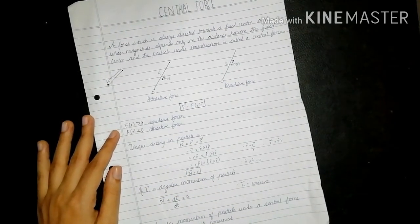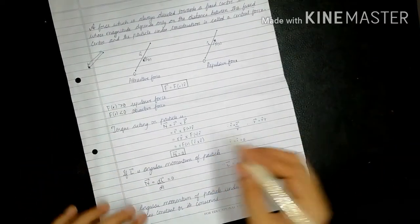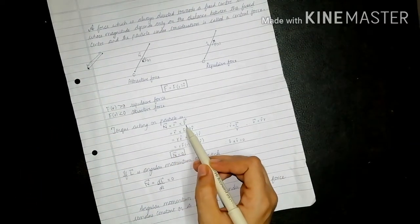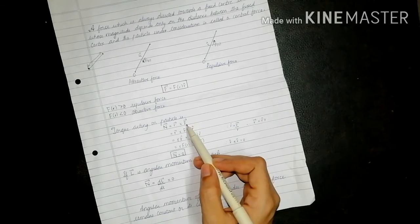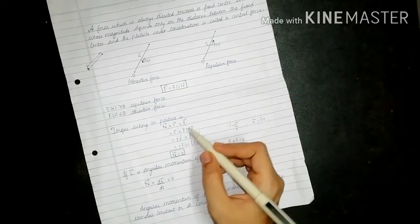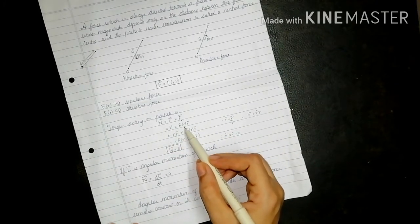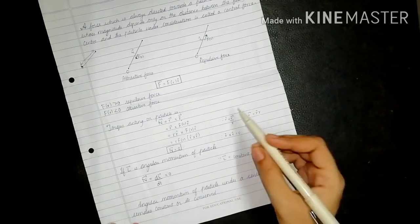Now torque acting on a particle. This equation is n bar equals r bar cross f bar. Now we have seen f bar is same as f of r, r cap. So we will substitute it here. So r bar equals r bar into f of r, r cap.